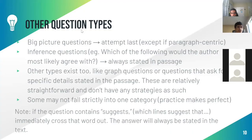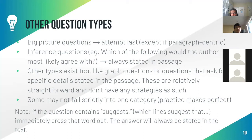For big picture questions — like 'what is the main idea of this passage?' — attempt these last, unless they're paragraph-centric. Attempting them last means you'll have answered all other questions first and will have a better understanding of the passage. If the question asks about a specific paragraph's main idea, answer it right there and then.